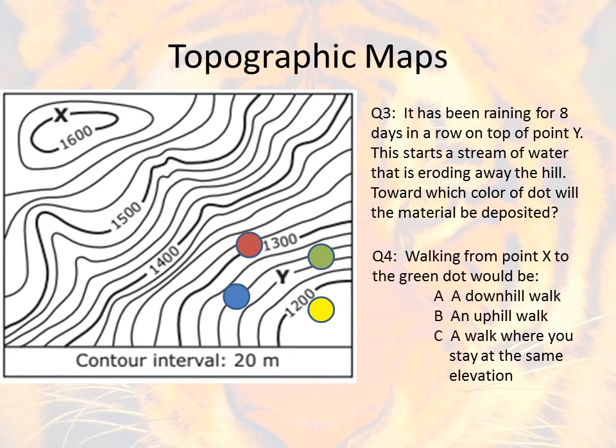Question four is a multiple choice question. Walking from point X to the green dot would be either answer A, a downhill walk; answer B, an uphill walk; or answer C, a walk where you would stay at the same elevation the entire time.